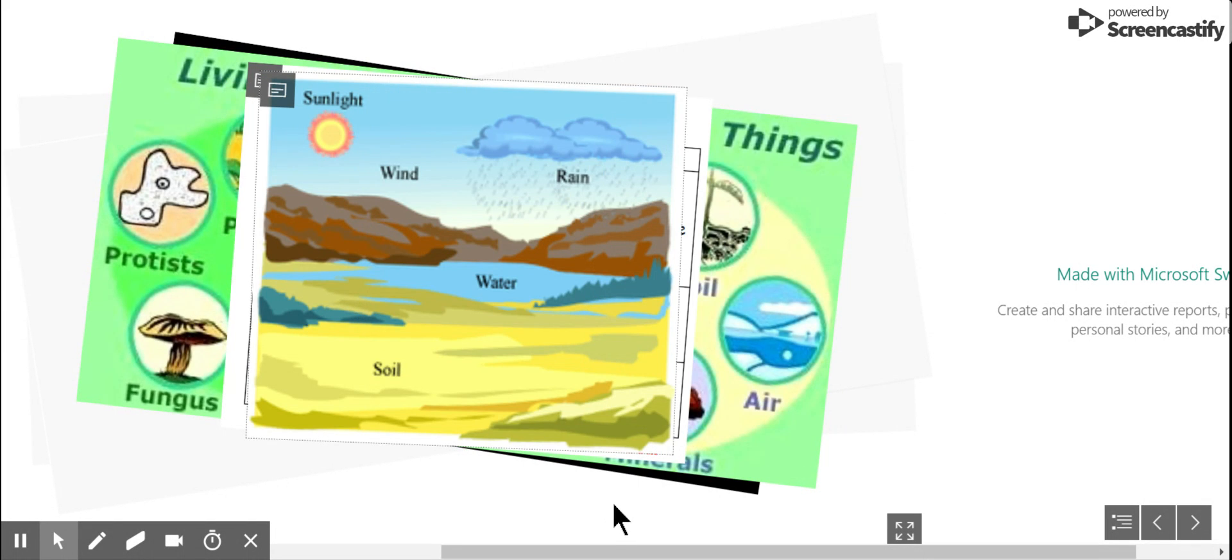Some other examples of abiotic factors are non-living things, sunlight, wind, rain, water, and soil. Some of these were also mentioned beforehand.